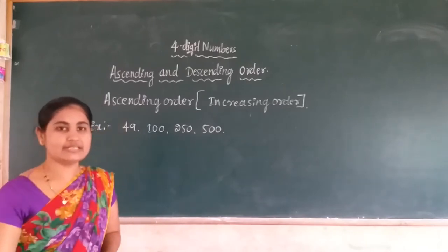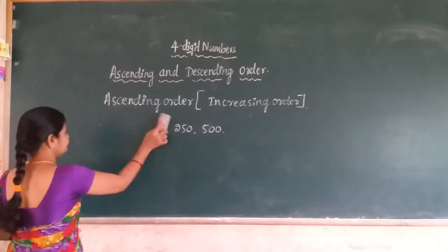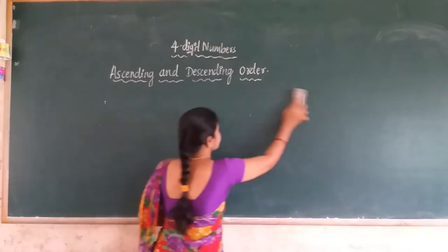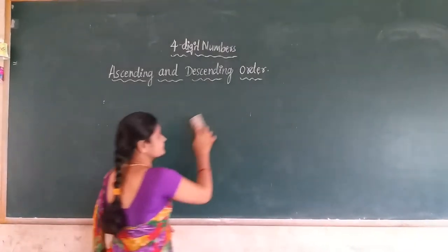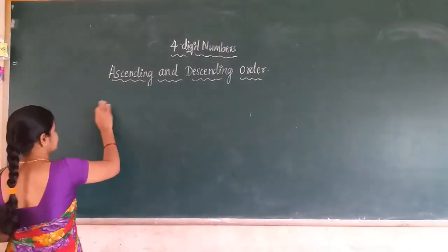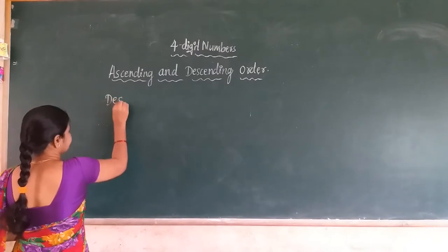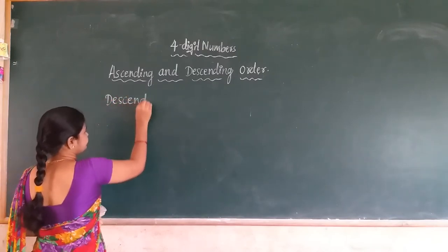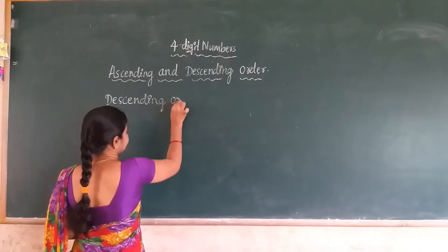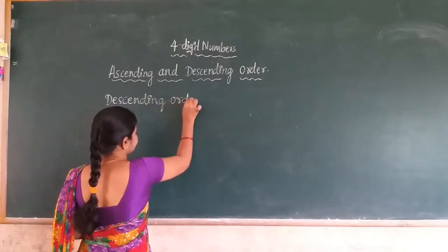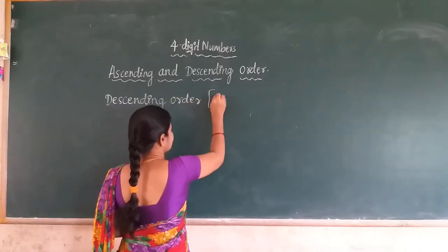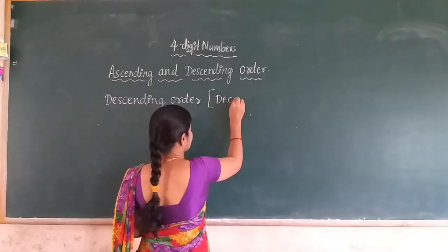Next, we go to the descending order. Descending order — another name is decreasing order of the numbers.